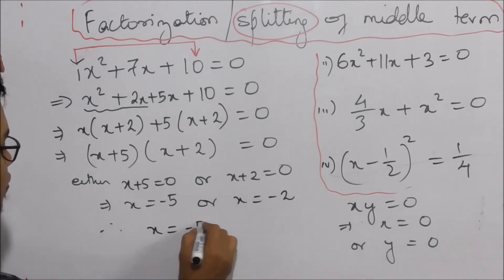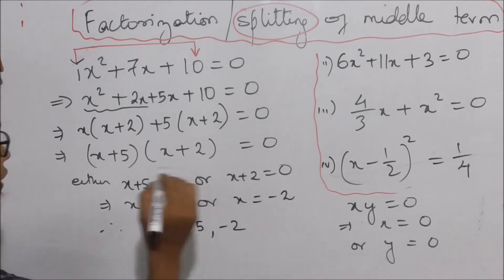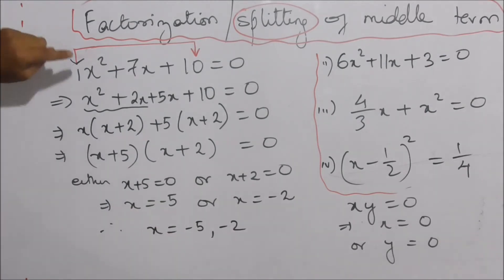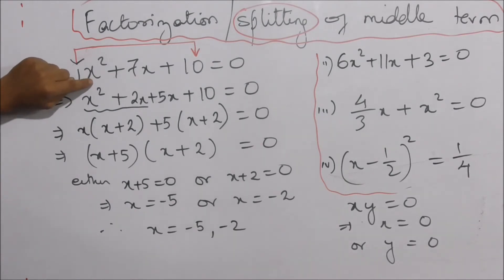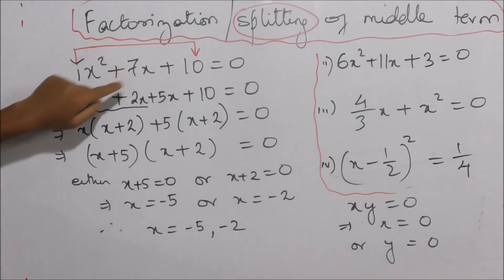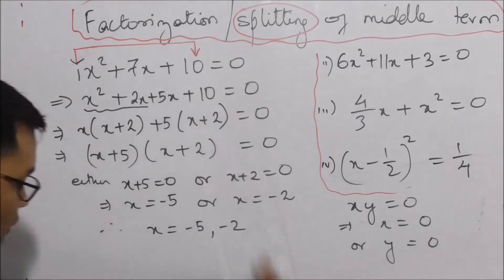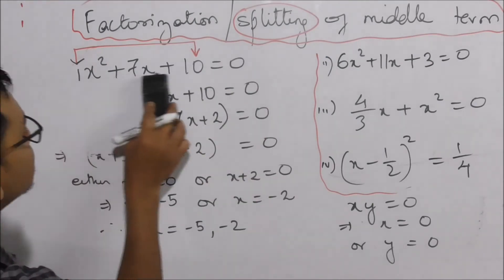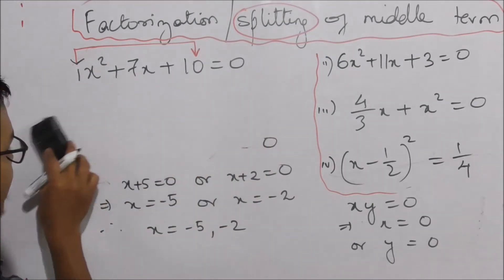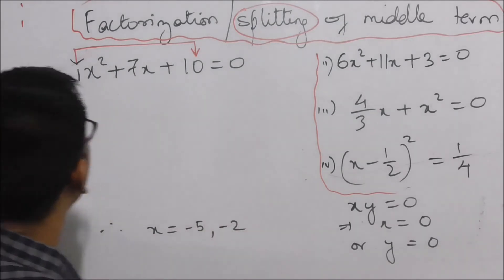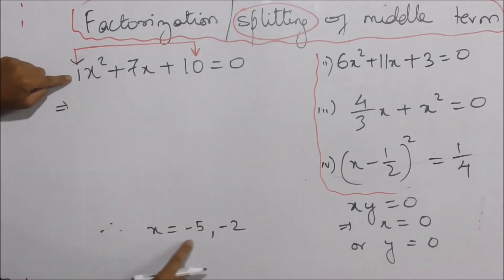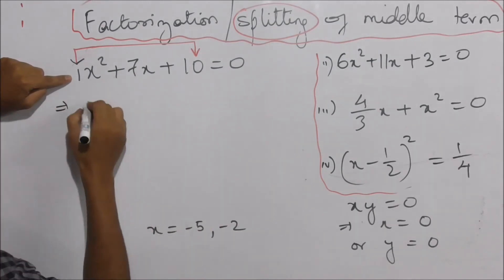Therefore, x is equal to minus 5 or minus 2. Then, x plus 5 is equal to minus 5 plus 5, which is equal to 0. So x is equal to minus 5.